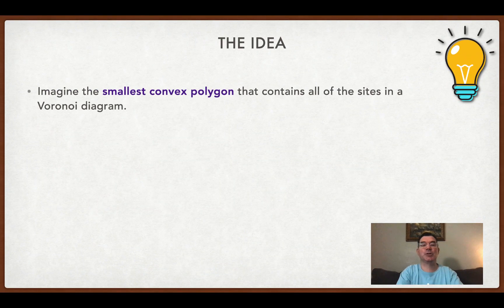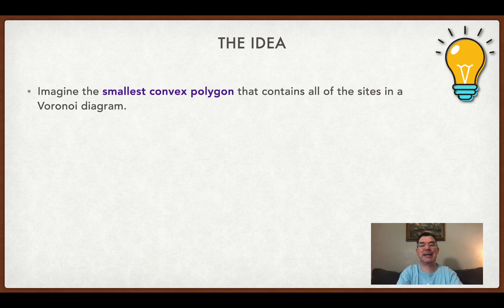The idea is that we're supposed to imagine the smallest convex polygon that contains all of the sites in a Voronoi diagram.